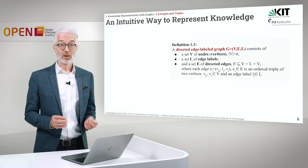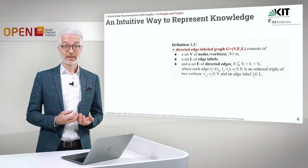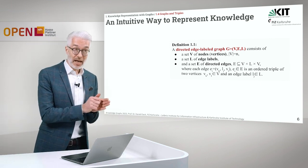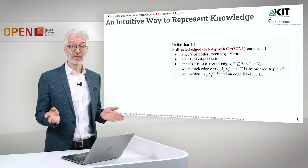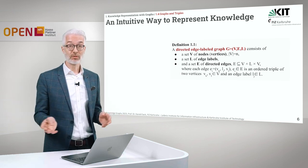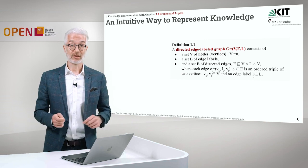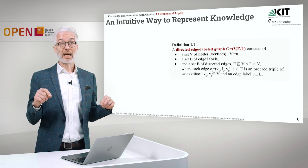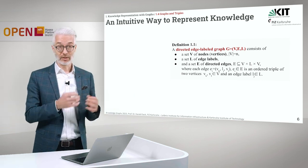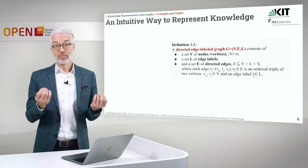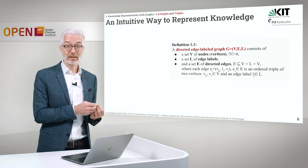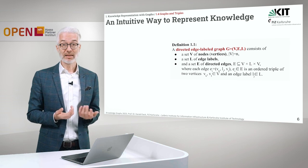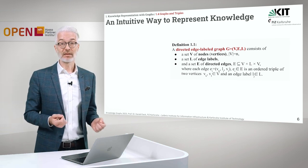So now we have to formally define what is a graph. We need a specific kind of graph because the edges between the nodes have a direction — they always lead from the subject to the object, so it's a directed graph. Also, these edges are associated with a label, so 'played' in that sense. Leonard Nimoy, played, Spock — that was a label. So we have a directed edge-labeled graph G, which consists of three sets: V, E, and L.